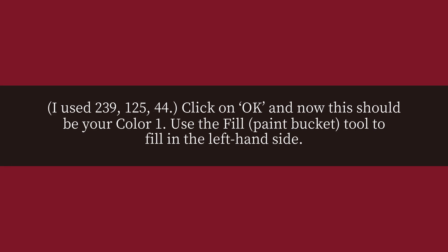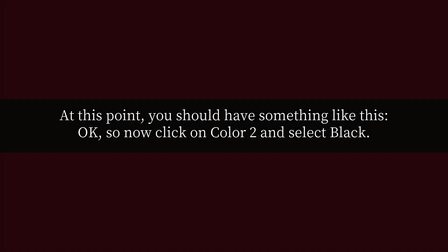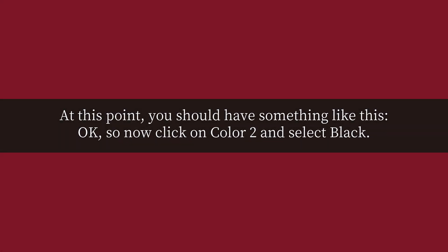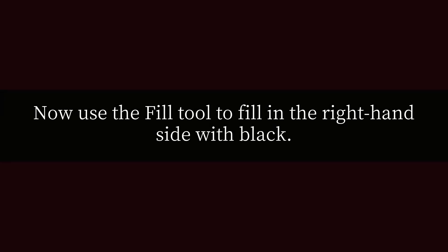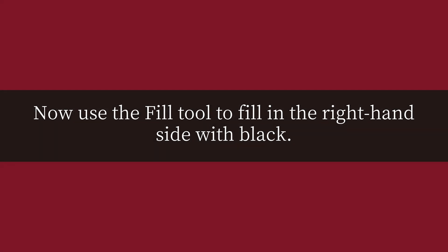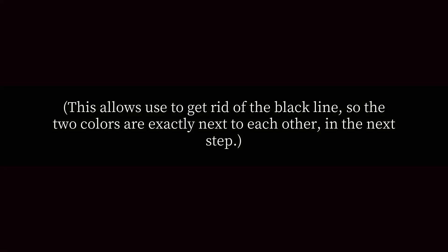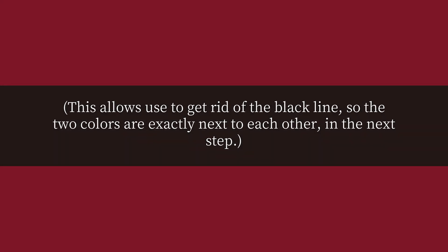Use the fill bucket tool to fill in the left-hand side. At this point you should have something like this. Now click on Color 2 and select black, then use the fill tool to fill in the right-hand side with black. This allows you to get rid of the black line so the two colors are exactly next to each other in the next step.